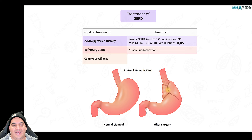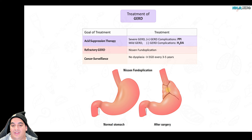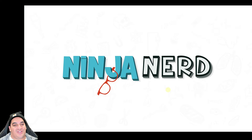GERD has a very high risk of cancer, especially if chronic. Survey these patients: if they have alarm symptoms such as vomiting, dysphagia, anemia, or weight loss, perform an EGD. If there's no dysplasia on EGD, check every three to five years. If dysplasia is found, ablate or resect that area of cancer — more details will follow in the oncology section on esophageal cancer.